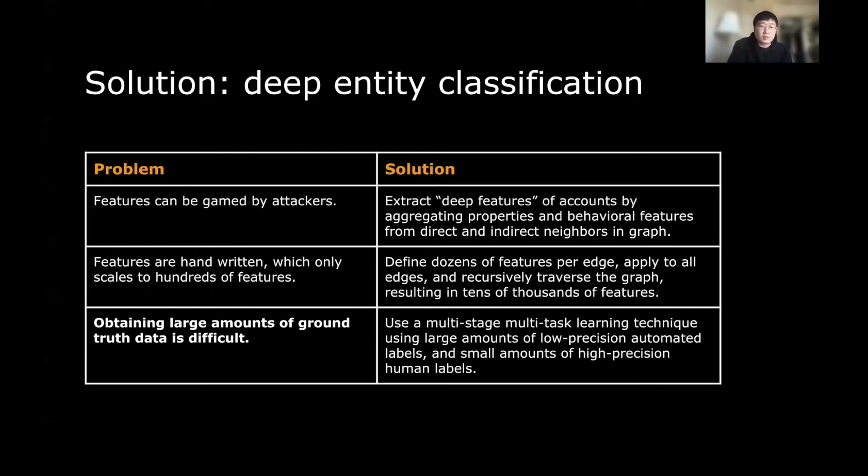The last piece of problem is also the biggest problem. It's that it's extremely hard for us to obtain a large amount of ground truth data. The proposal from DEC is to use a multi-stage training architecture. The first stage leverages the large amount of low precision automated labels and the second stage leverages the small amount high precision human labels. Let's dive into those each different problems separately.